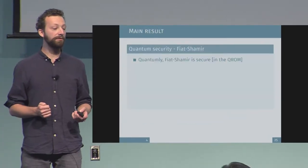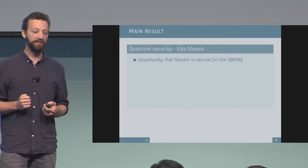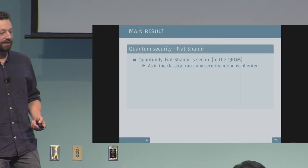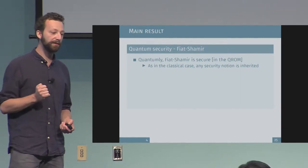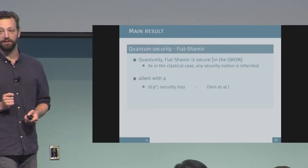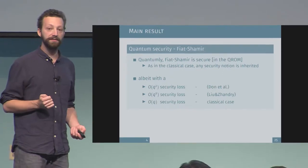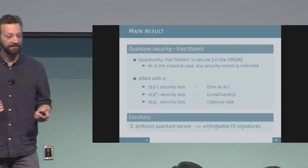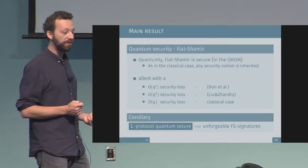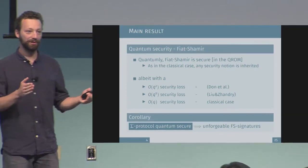However, the main result of both of our papers is that, indeed, also in the quantum setting, the Fiat-Shamir transformation is secure — now in the quantum random oracle model. Exactly as in the classical case, any security notion you can think of is inherited, with the only difference being that we now get a Q-squared security loss, or even Q-to-the-9 in the paper by Liu and Sandry, compared to the linear loss in the classical case. Nevertheless, this result allows us to conclude that if the underlying Sigma protocol is quantum secure, then we have unforgeable Fiat-Shamir signatures — a condition that is already non-trivial.